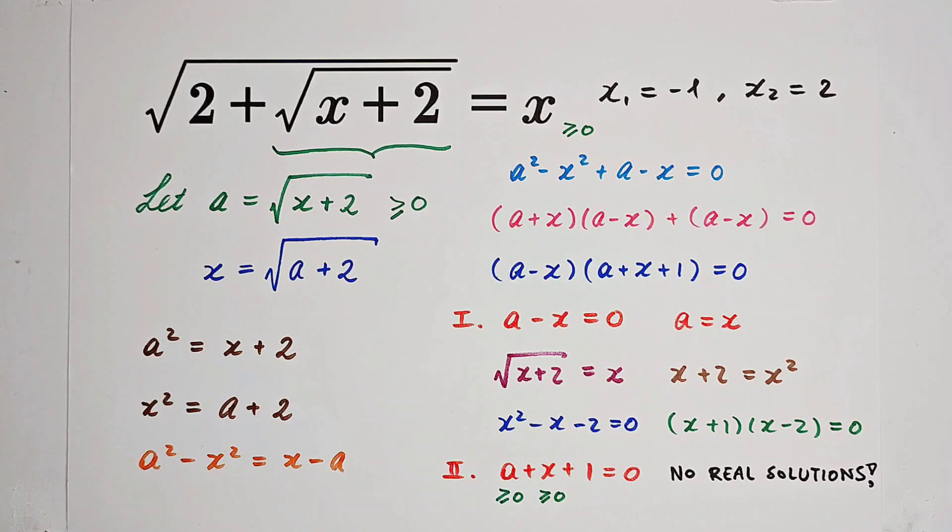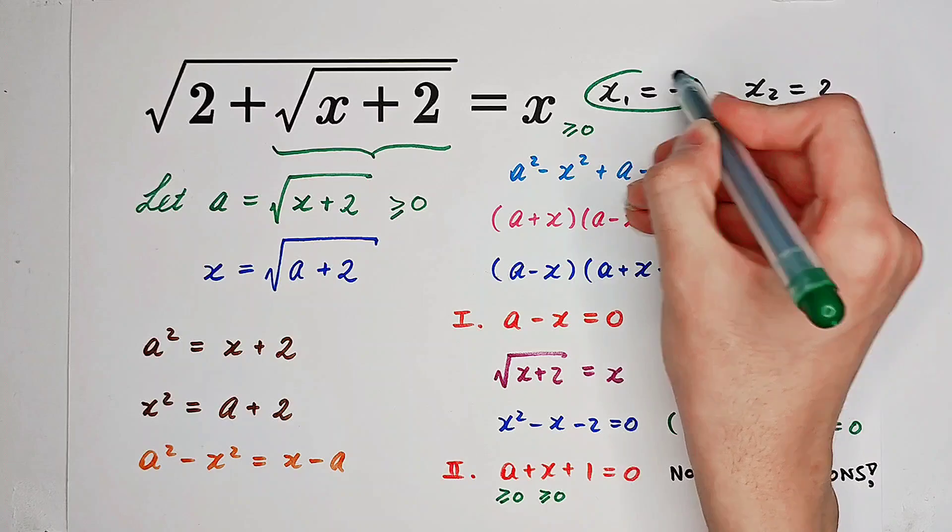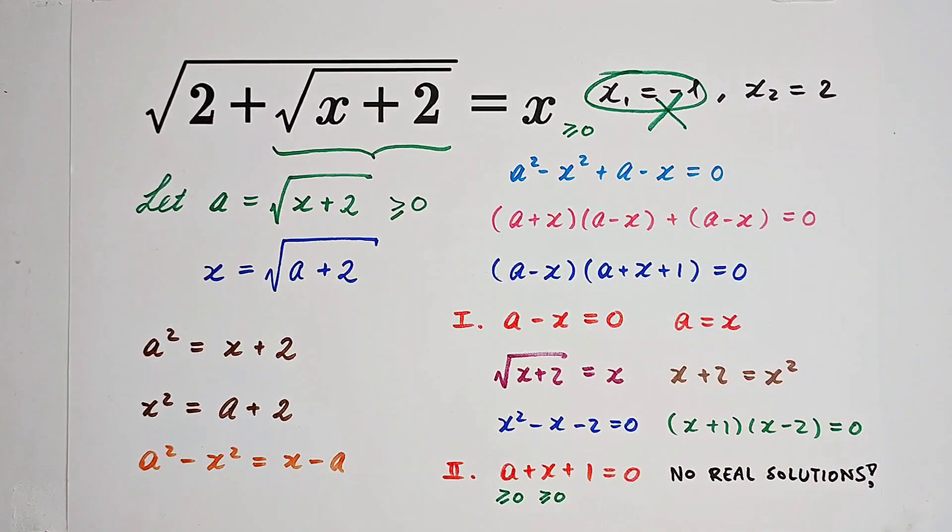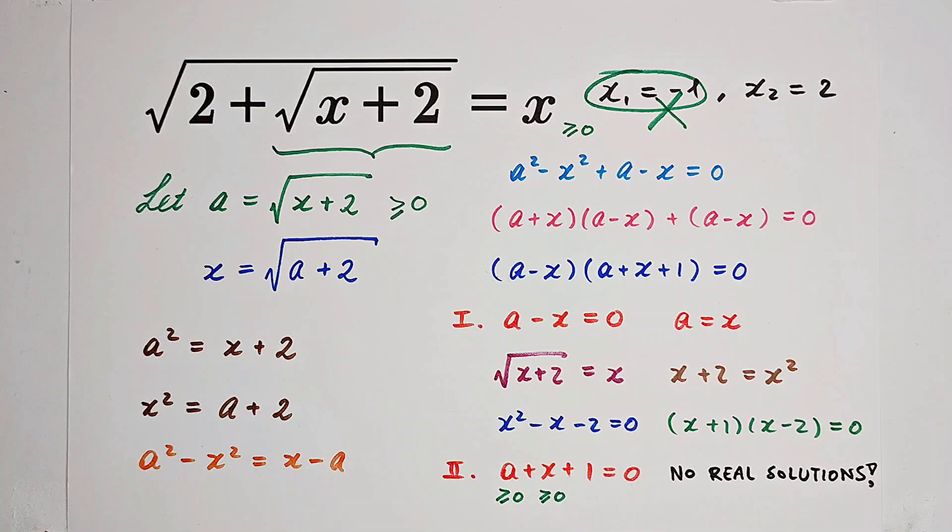Now maybe you're going to say yes, we only have two solutions: x1 equals negative 1, x2 equals 2. However, pay attention. We know that x is non-negative because it is a value of a square root. So that means x1 equals negative 1 cannot be accepted because negative 1 is negative. So that means we only have one solution: x equals 2.